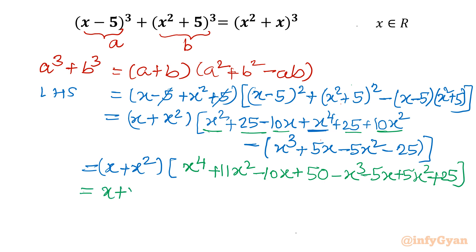Now 10x² + x² gives 11x². These three terms are over. Now what is left? -10x + 50, so -10x + 50. These all terms are over. Now -x³ - 5x + 5x² we will change the sign because minus is outside the bracket, then +25.